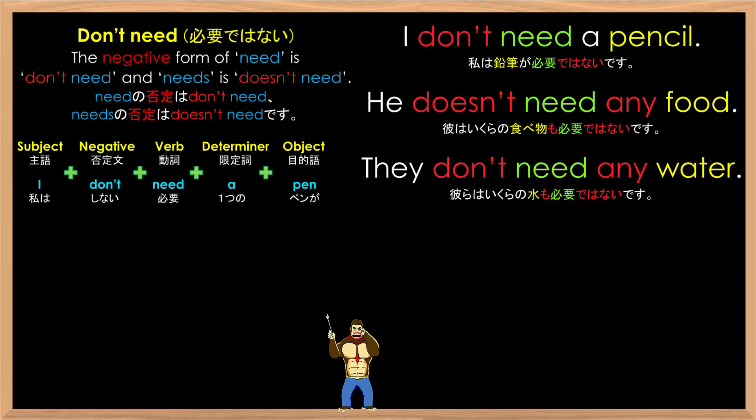For he, she, it, or any other singular person or object subject, we use doesn't, and all other subjects use don't. Also, when you change don't to doesn't, you don't need to add the S to the word need. You just change don't to doesn't, and need stays the same. Need doesn't need the S — you just need to do it one time in each sentence.